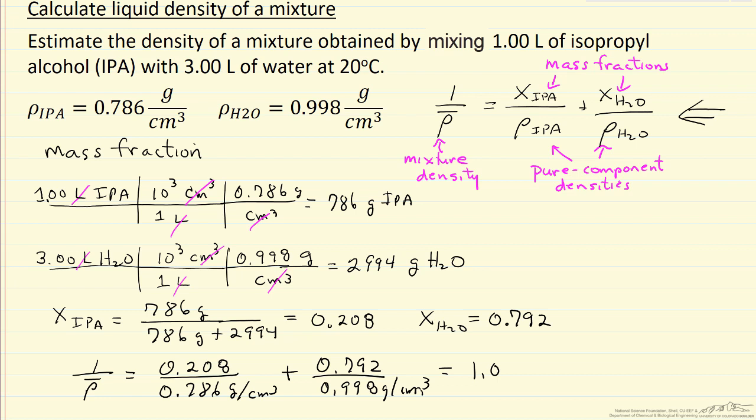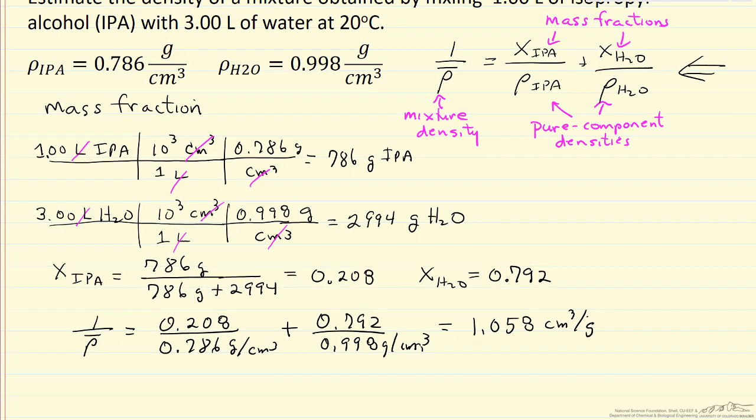1 over the density is, so this would be the specific volume, and therefore the inverse of that, the density then, is 1 over 1.058, and that's 0.945 grams per cubic centimeter. So that's the density of the mixture: mix 1 liter of isopropyl alcohol and 3 liters of water.